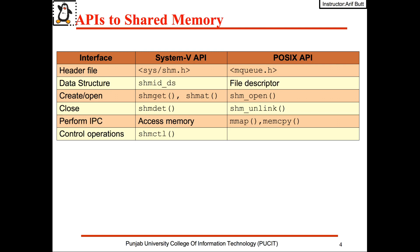We can implement or use shared memory in our programs using either the System 5 API or the POSIX API. We'll be using the System 5 API. The shmget call is used to create a new shared memory segment or obtain the identifier of an existing one. The shmat (shared memory attach) call is used to attach the shared memory segment with the address space of the calling process. After use, the shmdt call is used to detach the memory segment, and finally a process with appropriate privileges can delete the shared memory segment using the shmctl call.